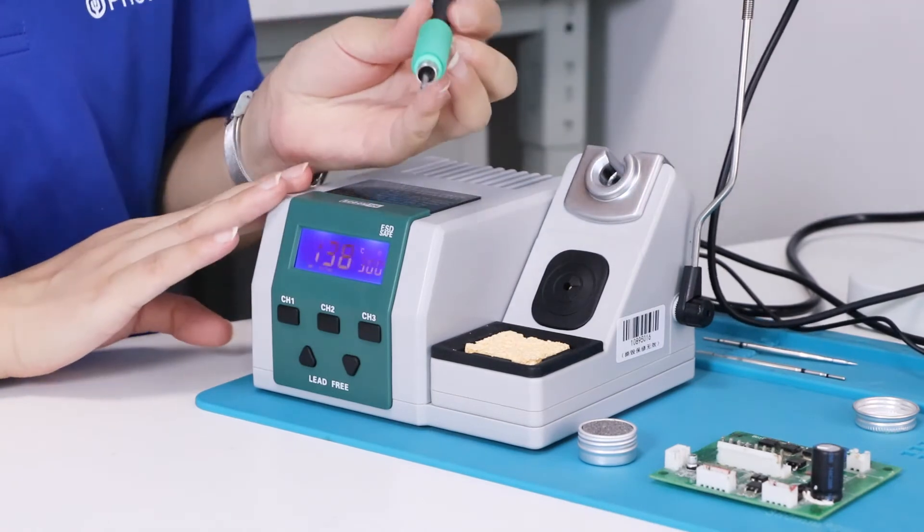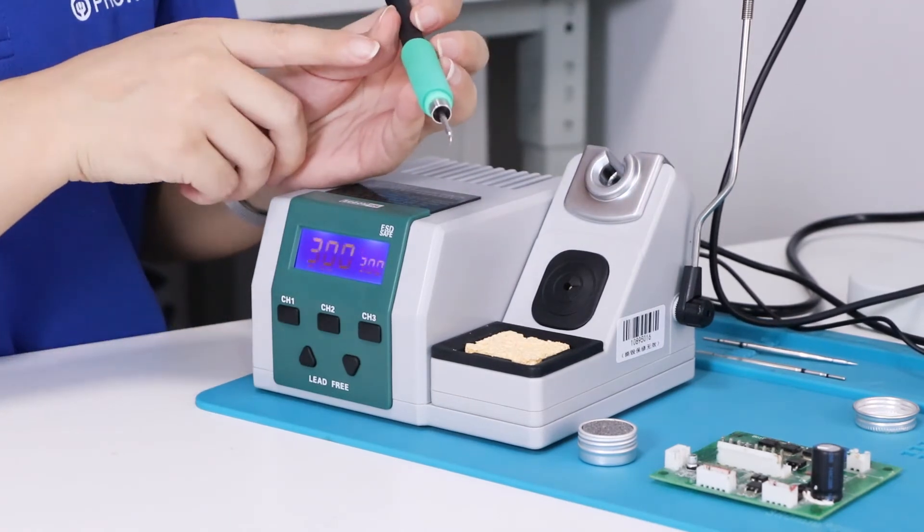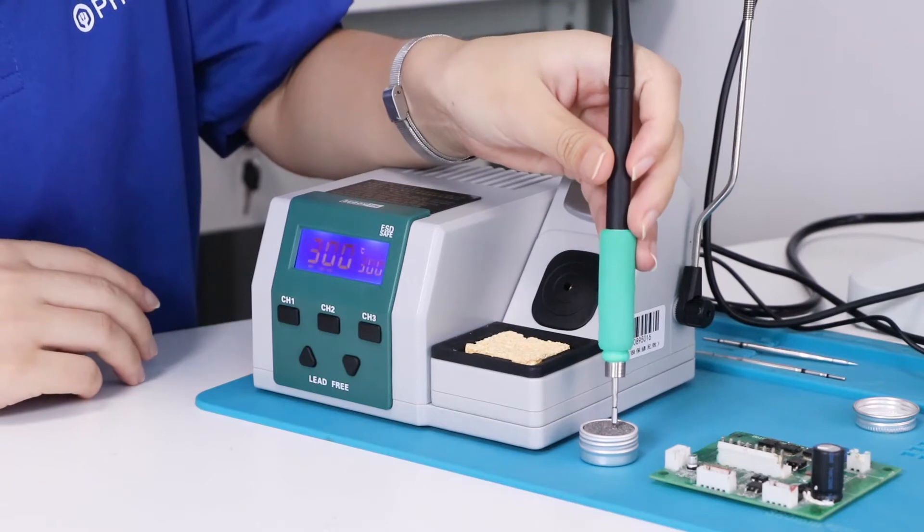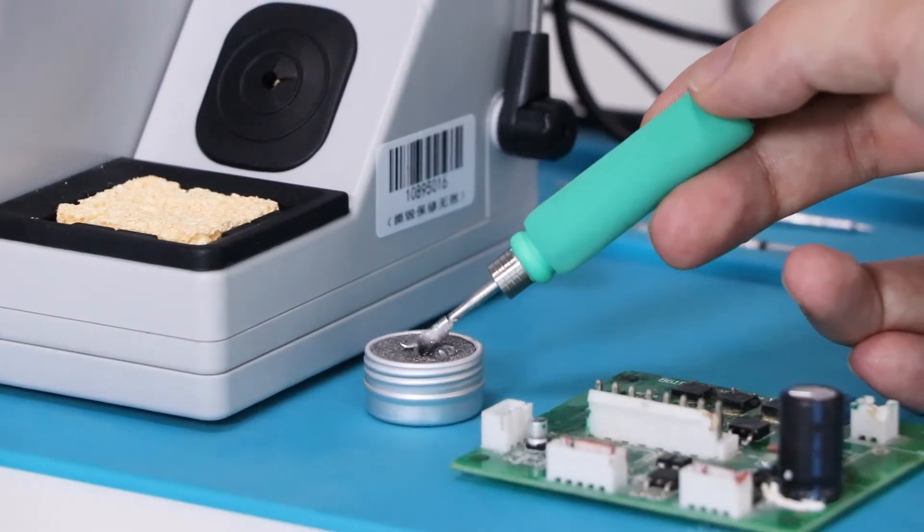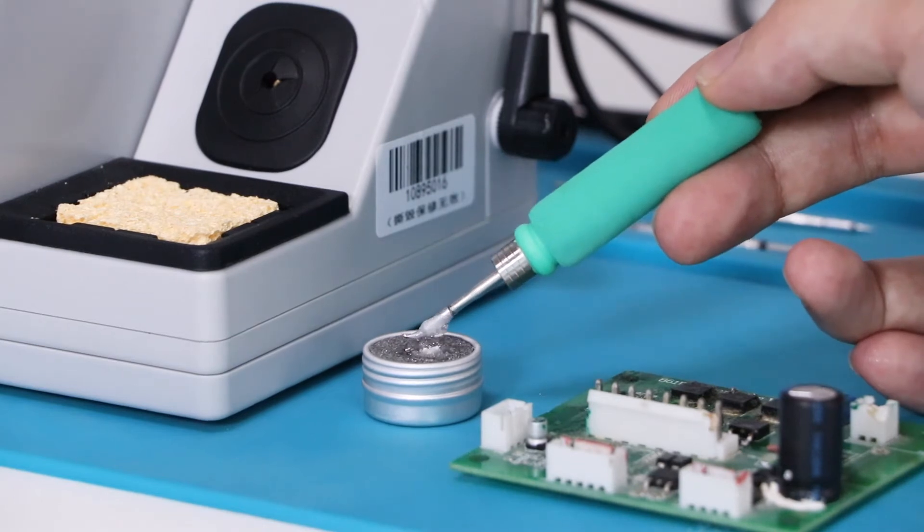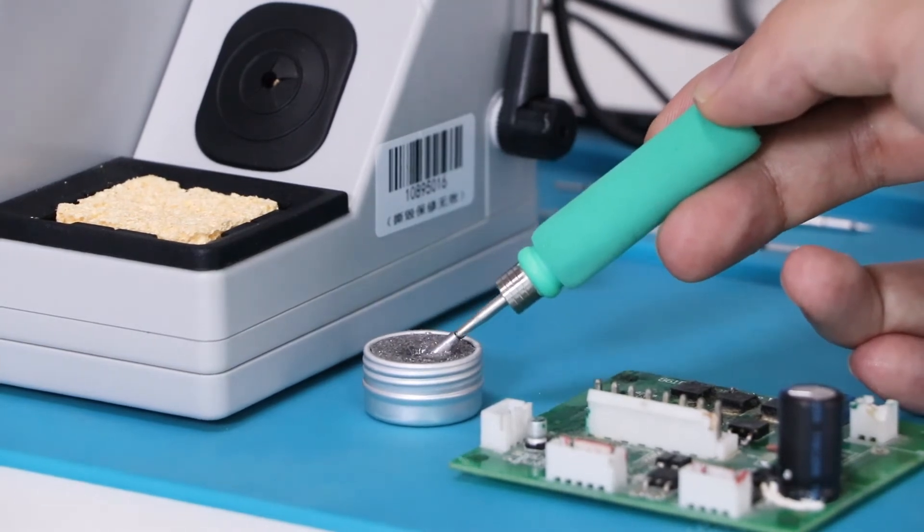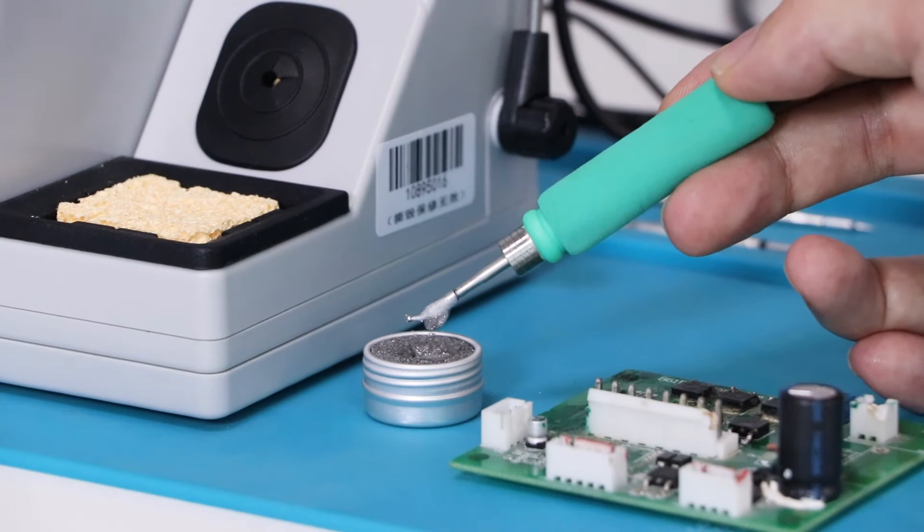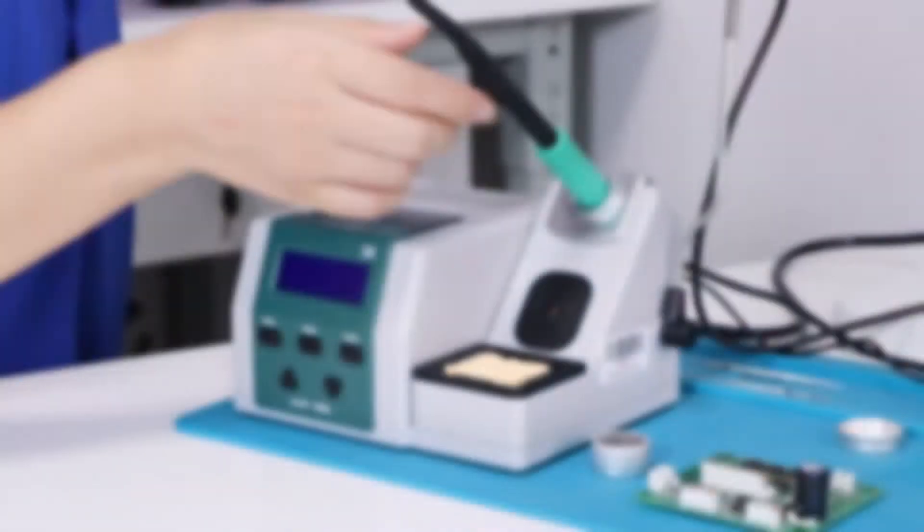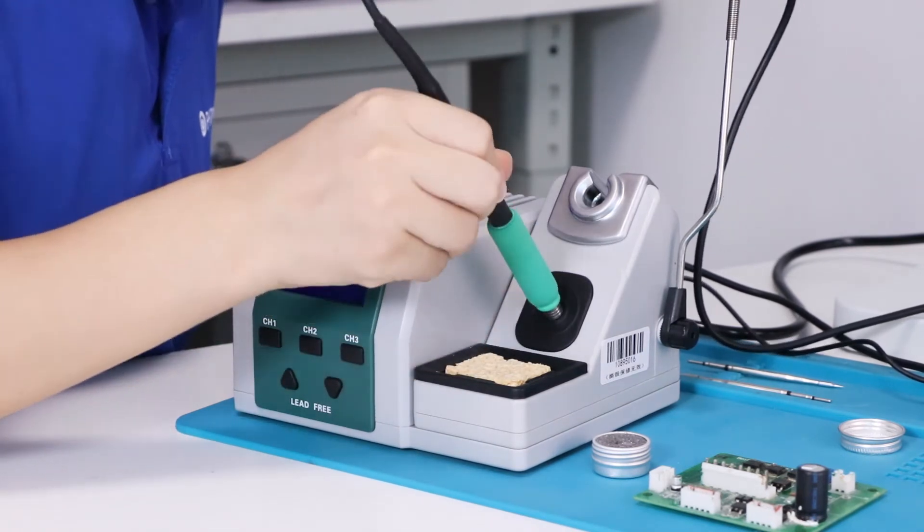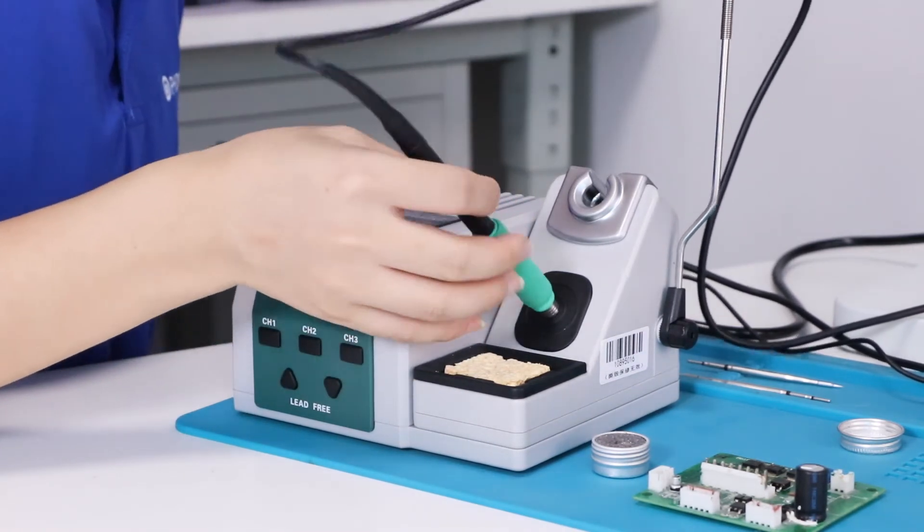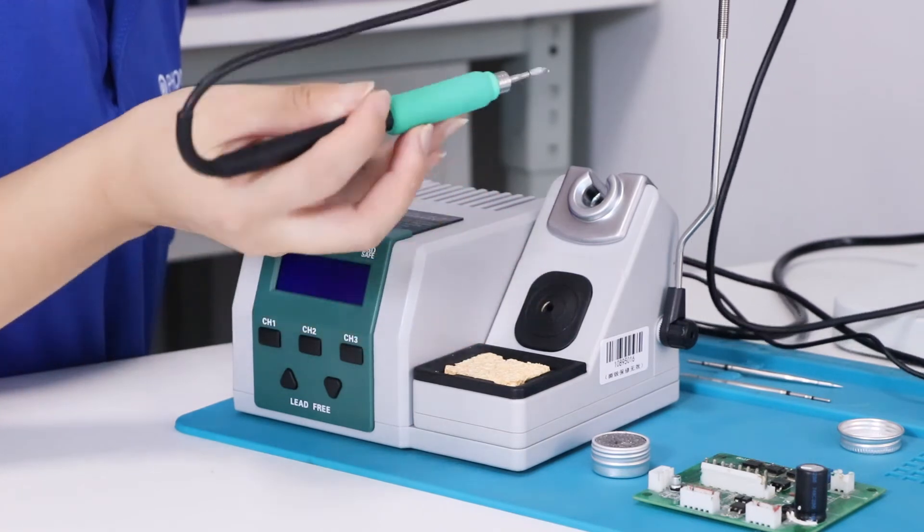For the handle, it can heat up in two seconds. You can clean it by sponge only. The metal balling can keep the handle clean.